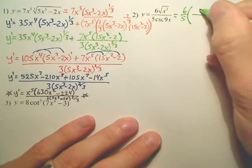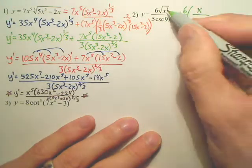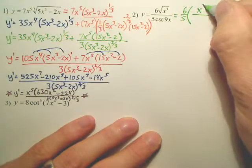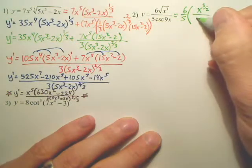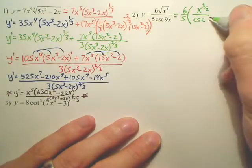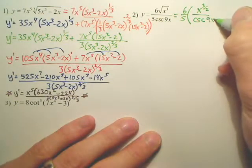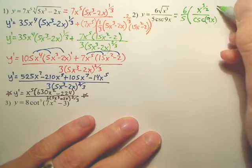And making the top x to the three-halves. Can you see that? And the bottom is cosecant 9x. And you might want to put the 9x in parentheses to help you out.